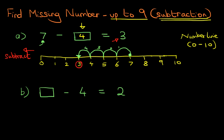Now, let's have a look at our second example. We have something minus 4 equals 2. In this scenario, we're going to firstly draw the number line again. We're starting at 0. We've got 1, 2, 3, 4, 5, 6, 7, 8, 9, and 10. So, that is our number line from 0 to 10.